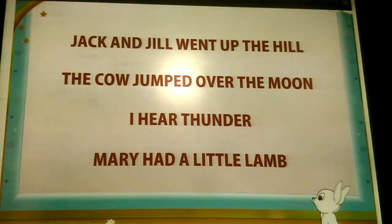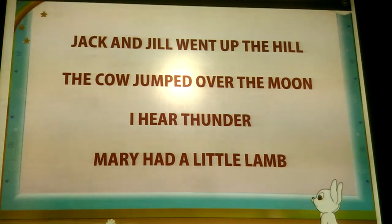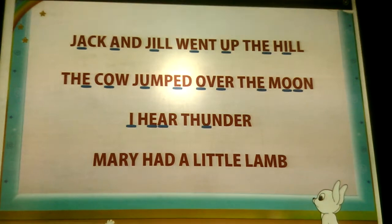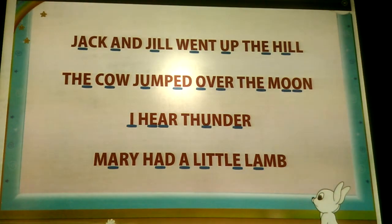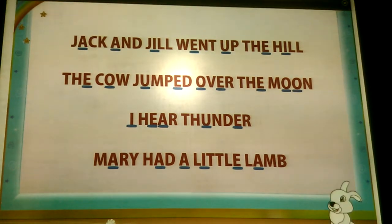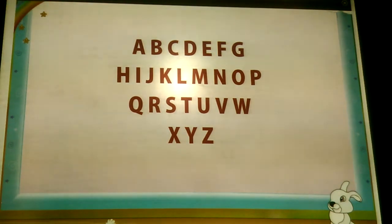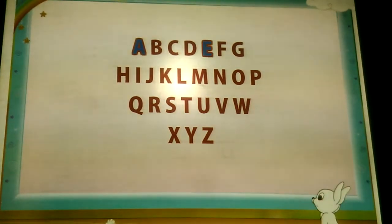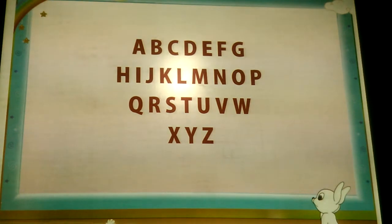Here are a few lines from nursery rhymes. Underline the vowels in the different lines. That was really fast, Rainbow! Always remember, in the 26 letters of the alphabet there are 5 vowels. They are A, E, I, O and U. The remaining 21 letters are called consonants.